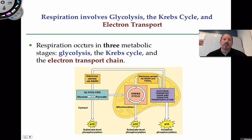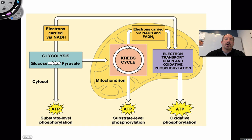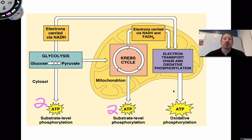Respiration involves three metabolic reactions: glycolysis, Krebs, and the electron transport system. Glycolysis is occurring in the cytoplasm, the Krebs cycle in the mitochondrial matrix, and the electron transport chain in the inner membrane inside the mitochondria. The electron transport chain is associated with oxidative phosphorylation — a massive production of ATP. Two ATP were produced during glycolysis and two during the Krebs cycle, both through substrate-level phosphorylation. The electron transport chain is going to generate most of the energy from glucose.